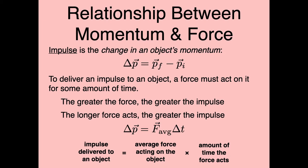How could we change the momentum of an object — how could we deliver an impulse? The answer is you need to apply a force. The greater the force you apply, the greater the change in momentum. But also, if you apply the force for a longer amount of time, that also influences the change in momentum. So the greater the force, the greater the impulse; and the longer the force acts, the greater the impulse.